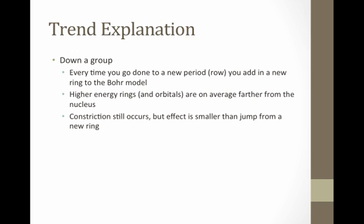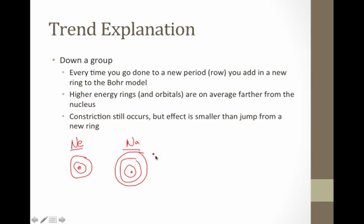Let's continue this explanation as we go down the group now. Every time we start a new row or a new period, we have to add a whole new electron into the Bohr model. This higher energy ring and the orbitals that go along with it are on average farther away from the nucleus than the lower energy rings. For example, down here, when I go from neon, which is at the end of the second row, that's going to require one, two rings to make a neon atom. When I go to move on to the next atom, which in this case is going to be a sodium atom, that's going to require one, two, three rings.